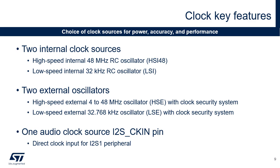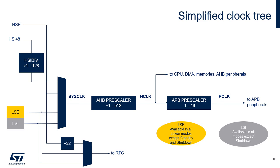The STM32C0 devices don't embed a PLL, but the HSI48 provides the max frequency for the device, which can then be reduced by clock dividers. The system clock can be derived from the high-speed internal 48 MHz RC oscillator (HSI48) or the high-speed external 4 to 48 MHz oscillator (HSE). The AHB clock, called HCLK, is derived by dividing the system clock by a programmable prescaler. The APB clock, called PCLK, is generated by dividing the AHB clock by programmable prescalers.